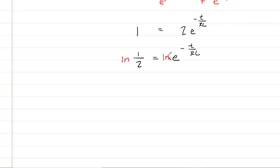When you do that, the natural log and the exponential are inverse functions, so they cancel. And that leaves you with just negative T over RC. And then we have the natural log of one-half.